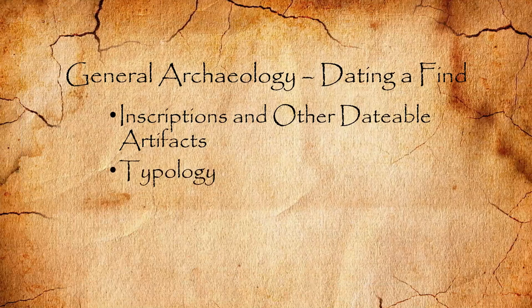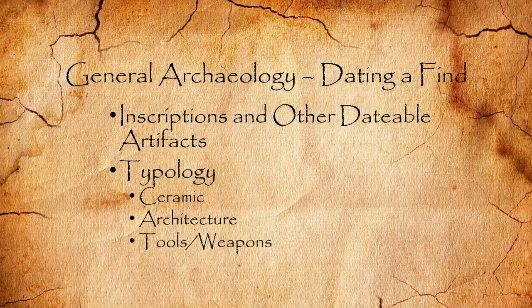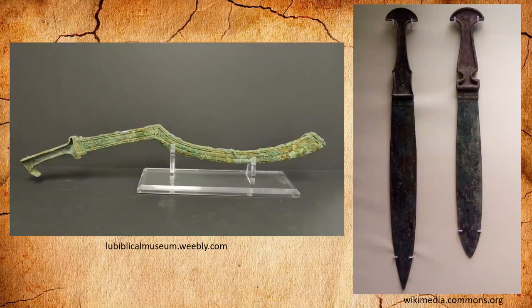Typology — ceramic typology — helps us to date a find. The same can be true of architecture. We can also draw those same kind of conclusions from the tools and weapons, specifically the material they're made from. You've all heard the terms Stone Age, Bronze Age, Iron Age — that is exactly the aspect of classifying a society based on the materials they use to make their tools and weapons. As an example, we have here an Egyptian kopesh and a Babylonian thrusting sword. Both are made from bronze, but you can see very different forms from very different cultures. So if you're in Canaan and you find a kopesh, chances are there was probably an Egyptian military presence there — likewise with the Babylonian thrusting sword.